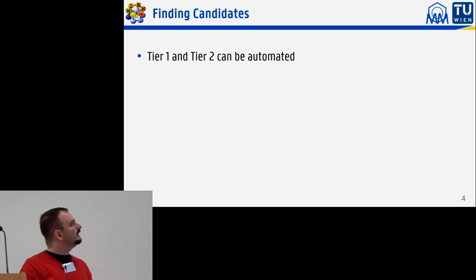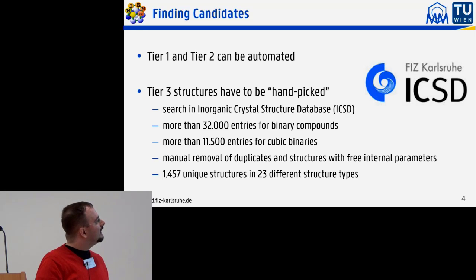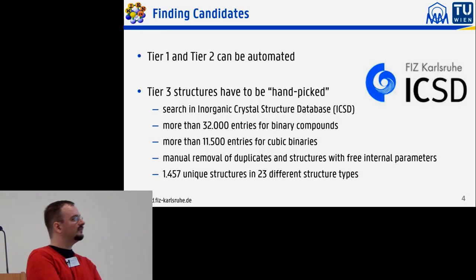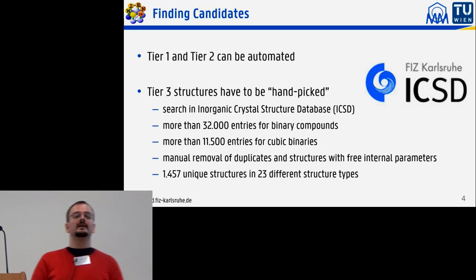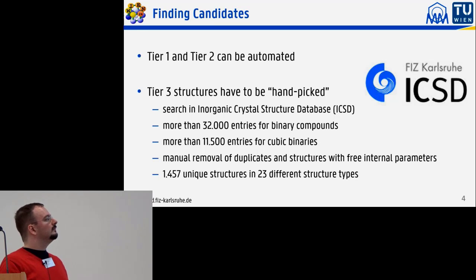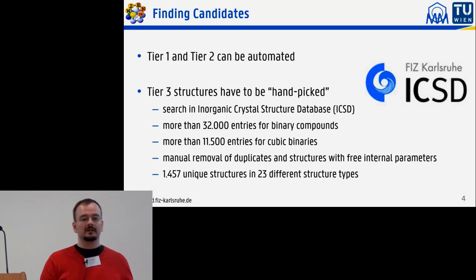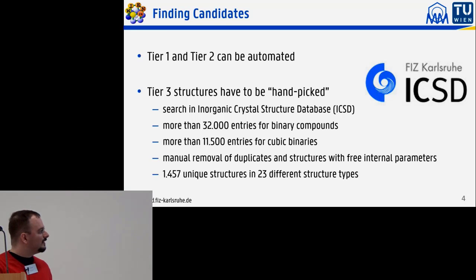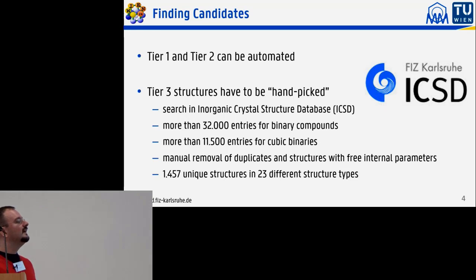The Tier 3 candidates were handpicked from the Inorganic Crystal Structure Database (ICSD), which contains about 30,000 binary compounds of which about 12,000 are cubic. I spent the better part of a month determining which of those compounds are usable for our test set, arriving at about 1,500 unique structures in 23 different structure types.